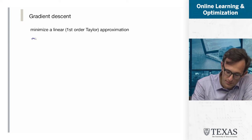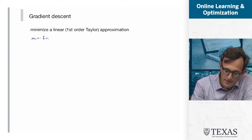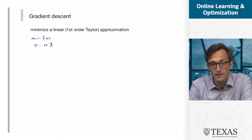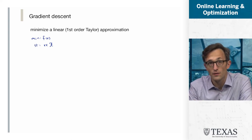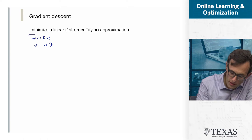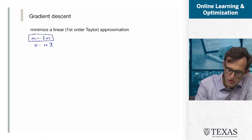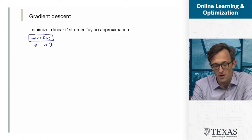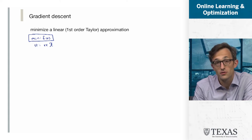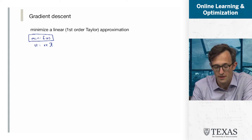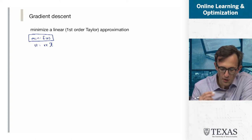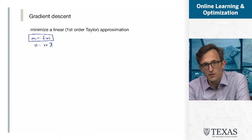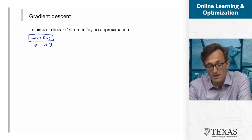We're interested in solving the problem: minimize f of x subject to x in our constraint set. Everything inside is convex. We're going to focus initially on just the objective function — we're going to imagine that we have no binding constraints. You can imagine that our constraint set is all of ℝⁿ. So f of x is some function that is potentially difficult for us to minimize.